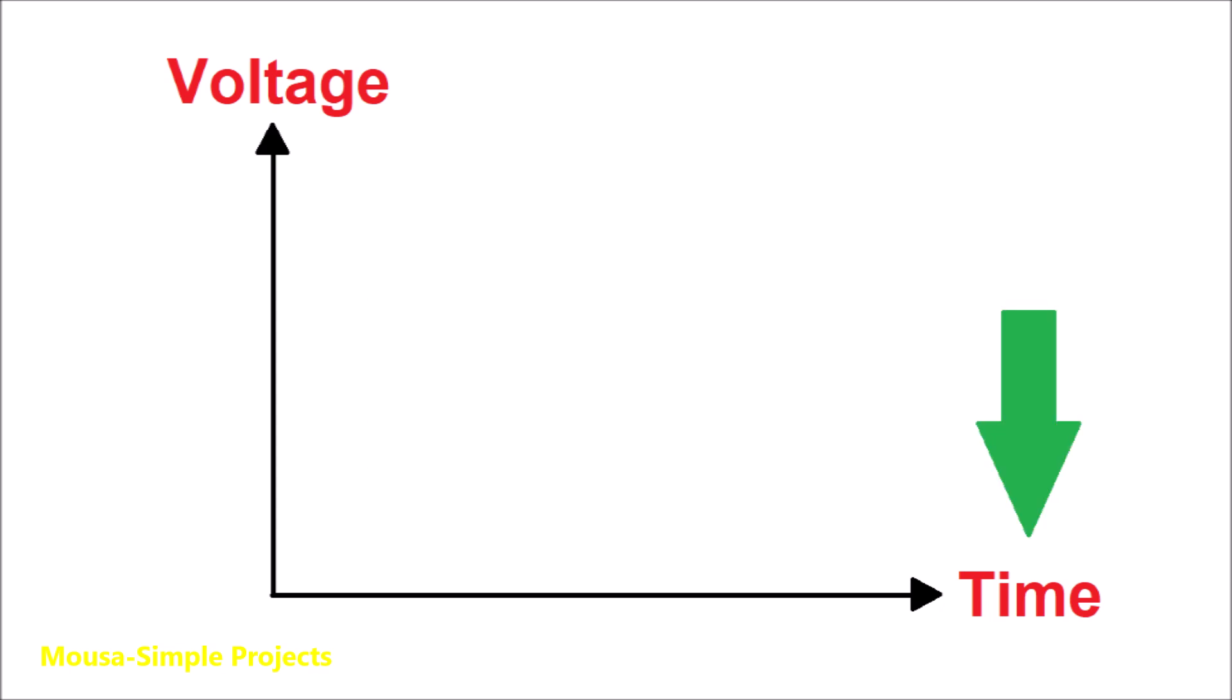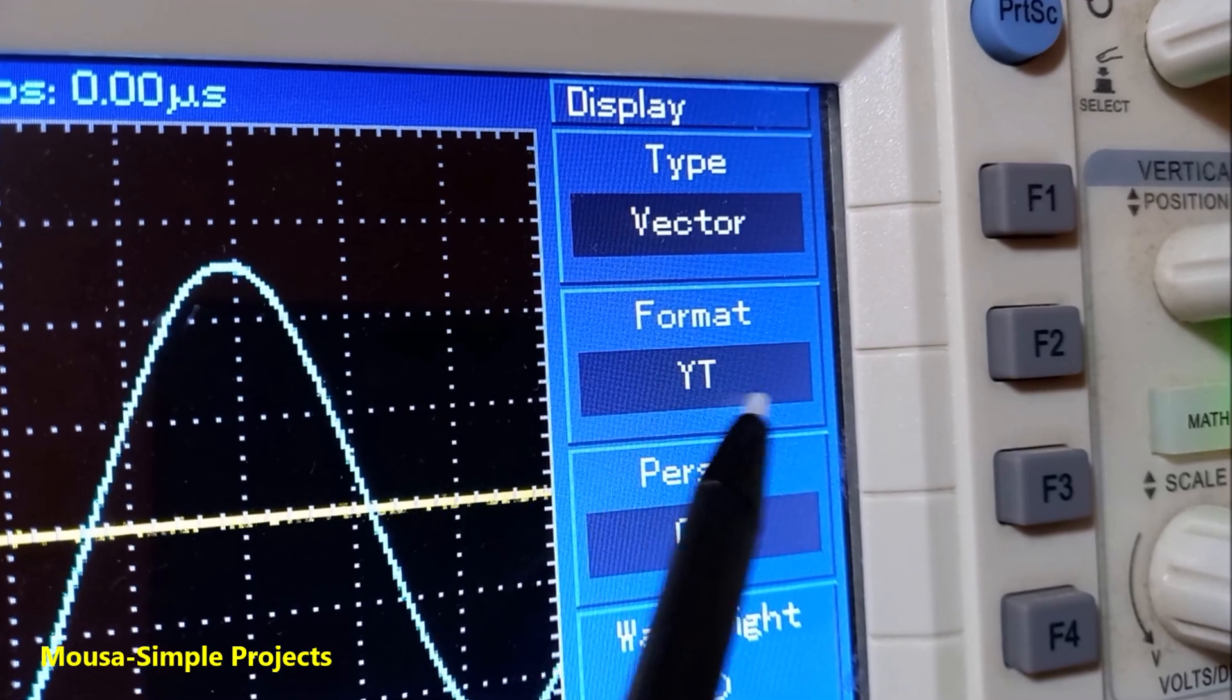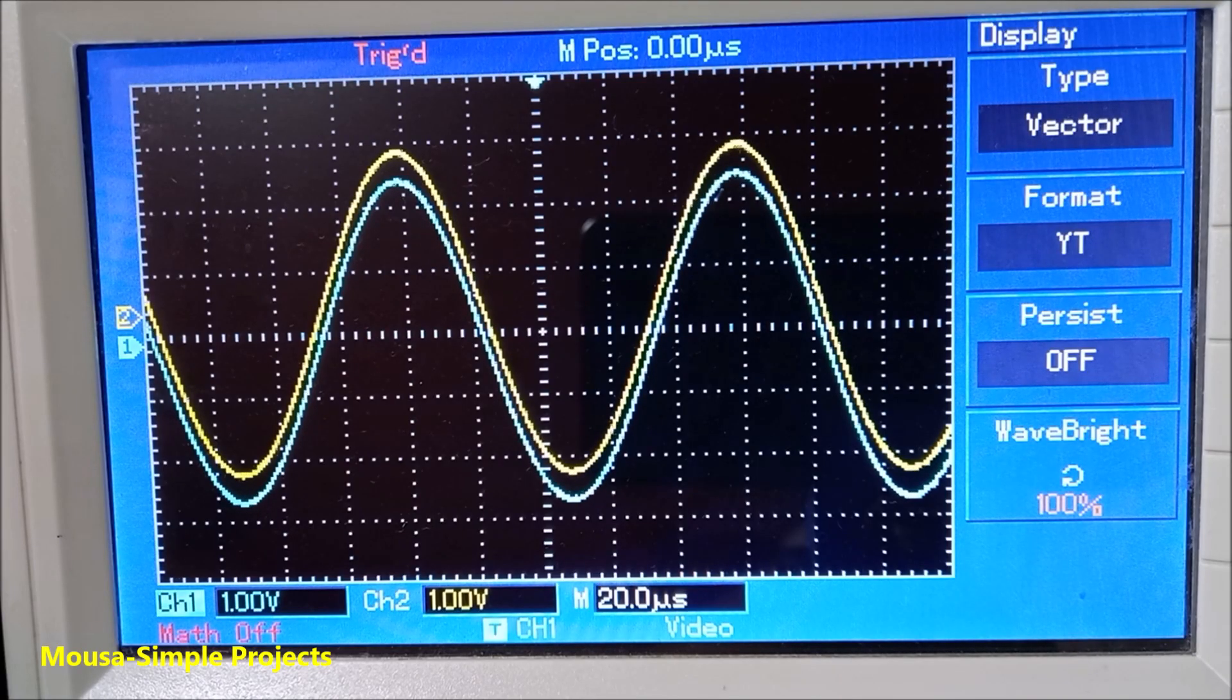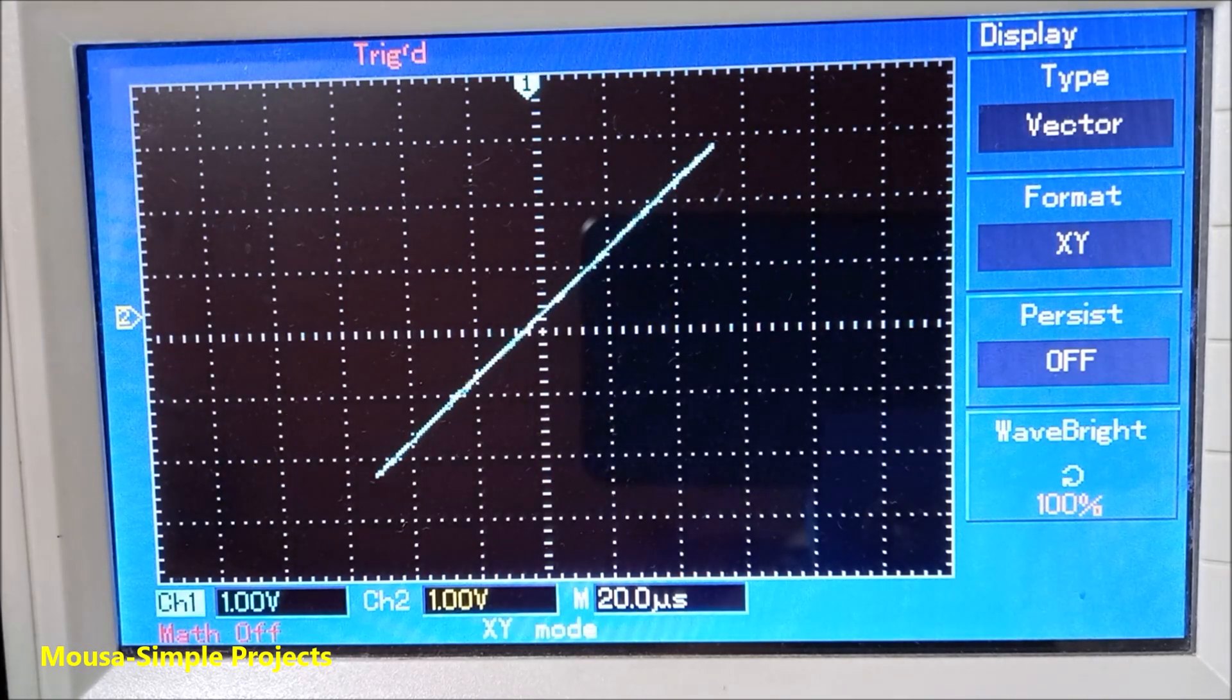However, in some applications, we can replace the time axis with another voltage waveform by setting your oscilloscope on XY mode. When the two waveforms are in phase with the same frequency and amplitude, the result will be a straight line with an angle of 45 degrees.